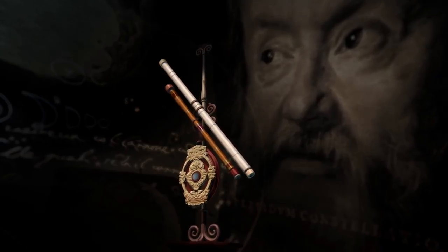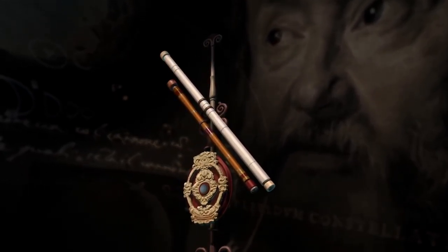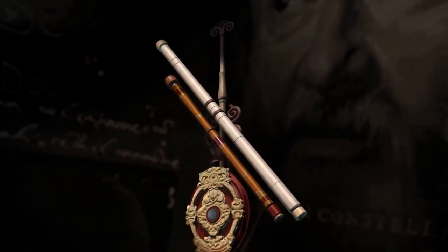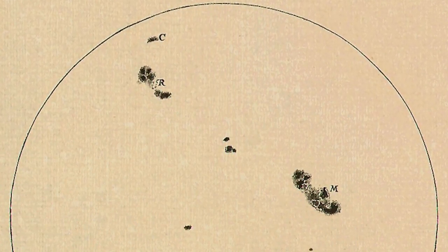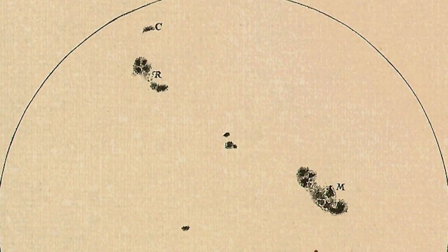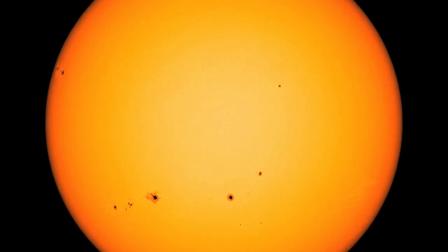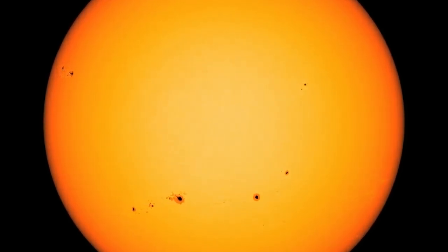More than 400 years ago, Galileo Galilei became one of the first astronomers to note that the Sun's surface exhibited dark imperfections, now known as sunspots. What Galileo didn't realize at the time was that these dark spots were a sign that the Sun is a magnetic star.